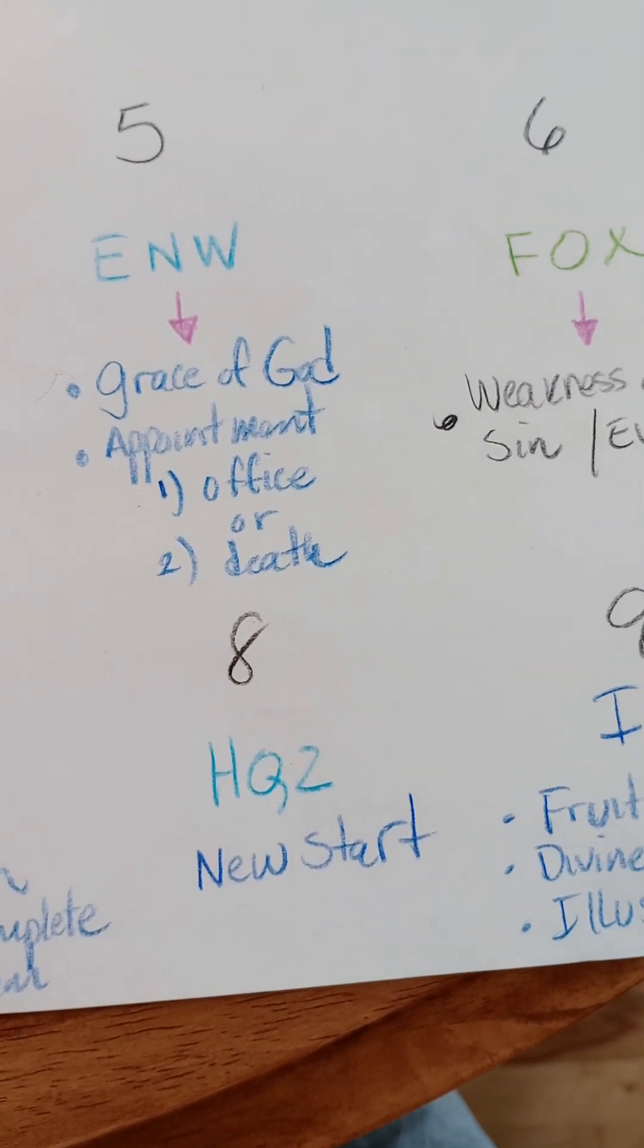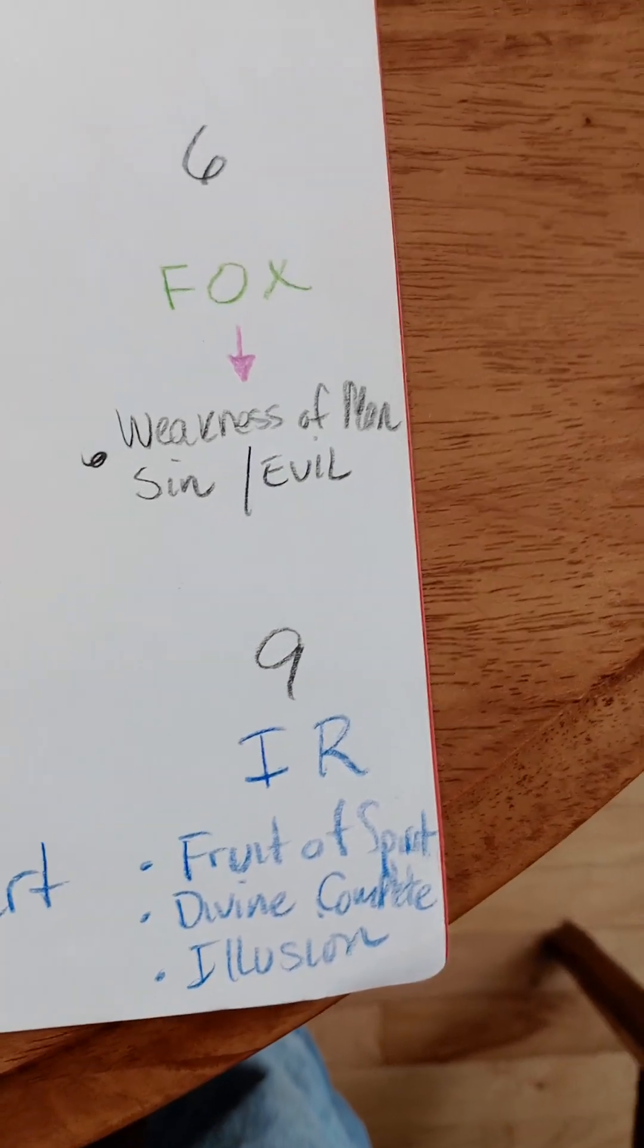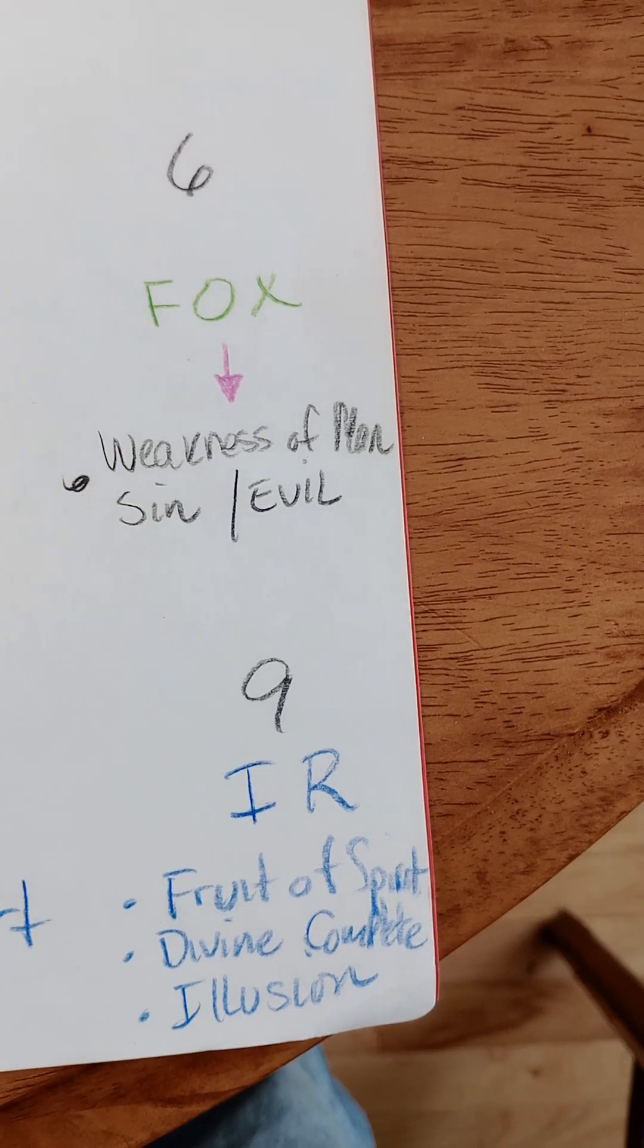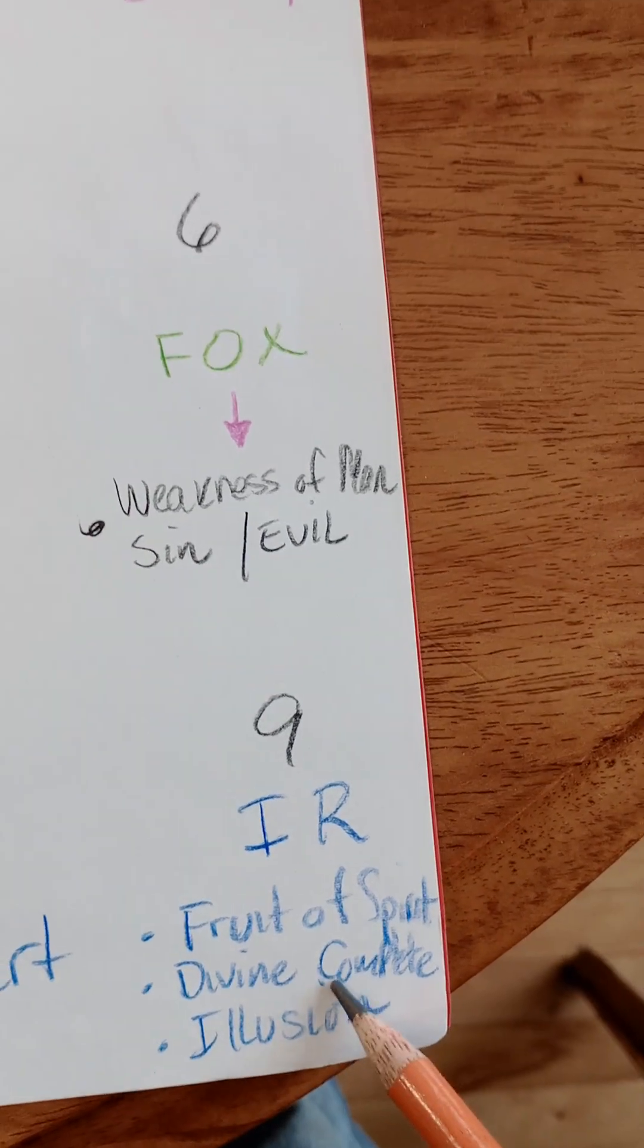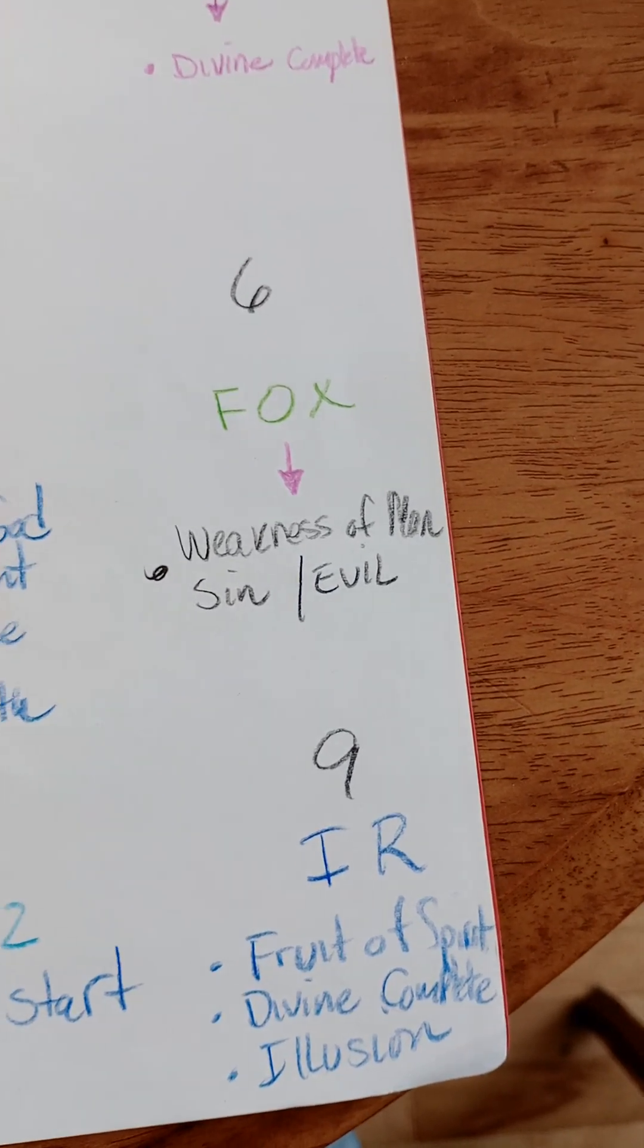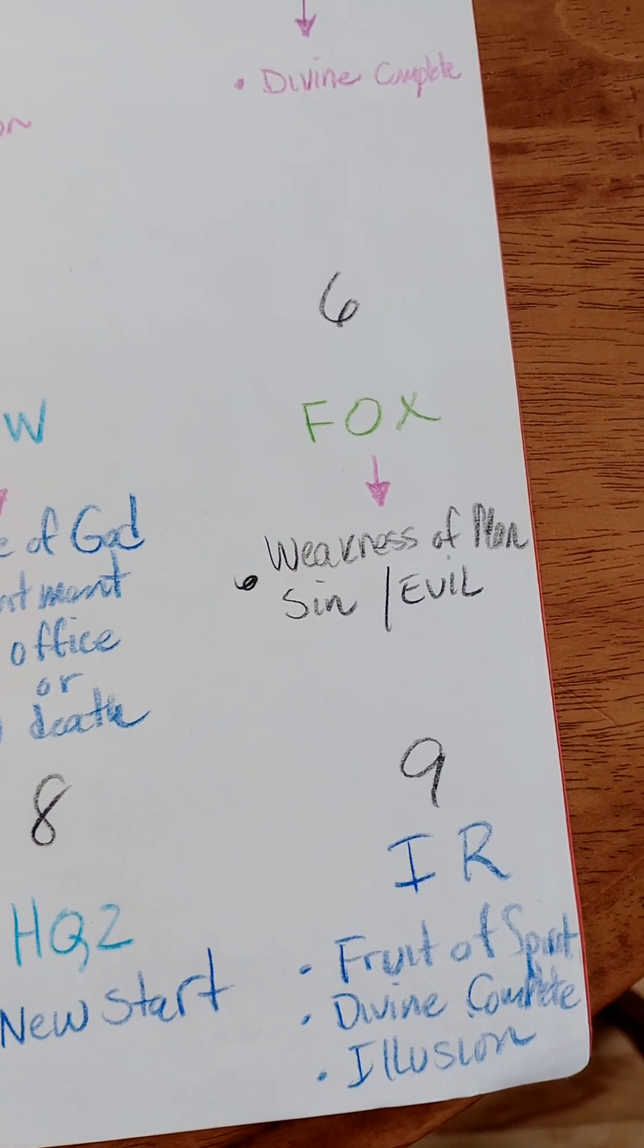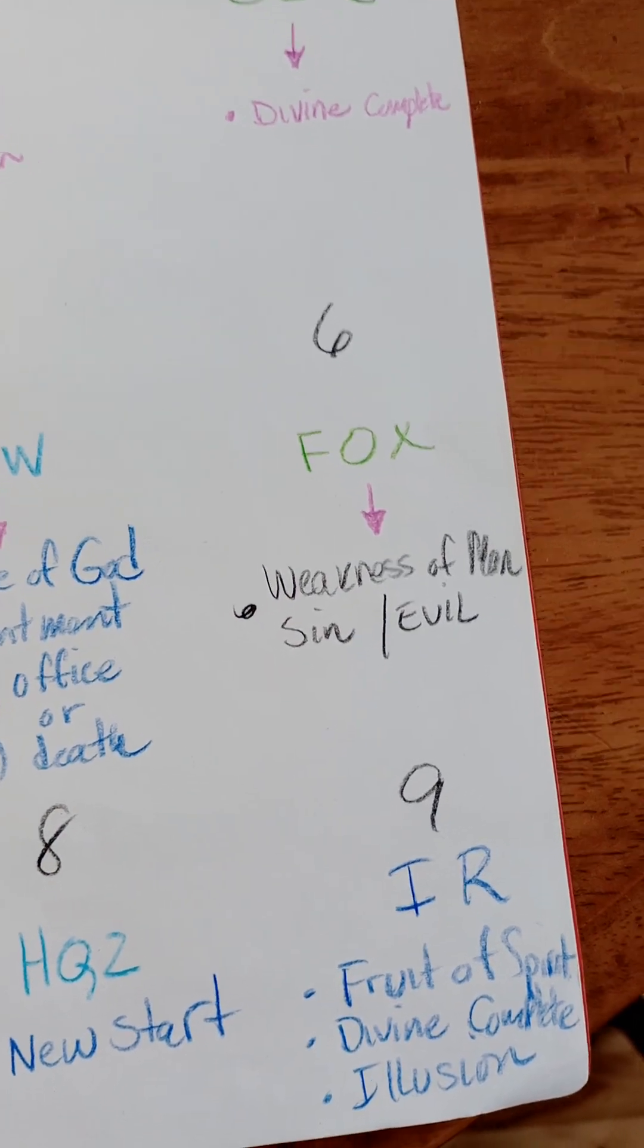Eight is a new start. Think of Jesus dying on the cross for our sins. Gives us a new start. Fruit of the Spirit is nine, divine completeness. I should have put illusion because according to the occult, nine is a number for illusion. They say any number multiplied times nine is going to add up to nine. Therefore, nine doesn't count as an illusion.